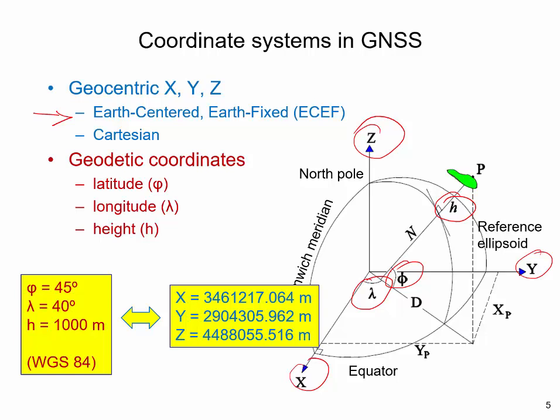For example, consider point P with a latitude of 45 degrees, a longitude of 40 degrees, and an ellipsoidal height of 1000 meters. Using the WGS84-related ellipsoid parameters, the corresponding Earth-centered, Earth-fixed coordinates can be found. The positive Y coordinate implies that the point is located on the eastern hemisphere, and the positive Z coordinate implies that the point is located on the northern hemisphere.